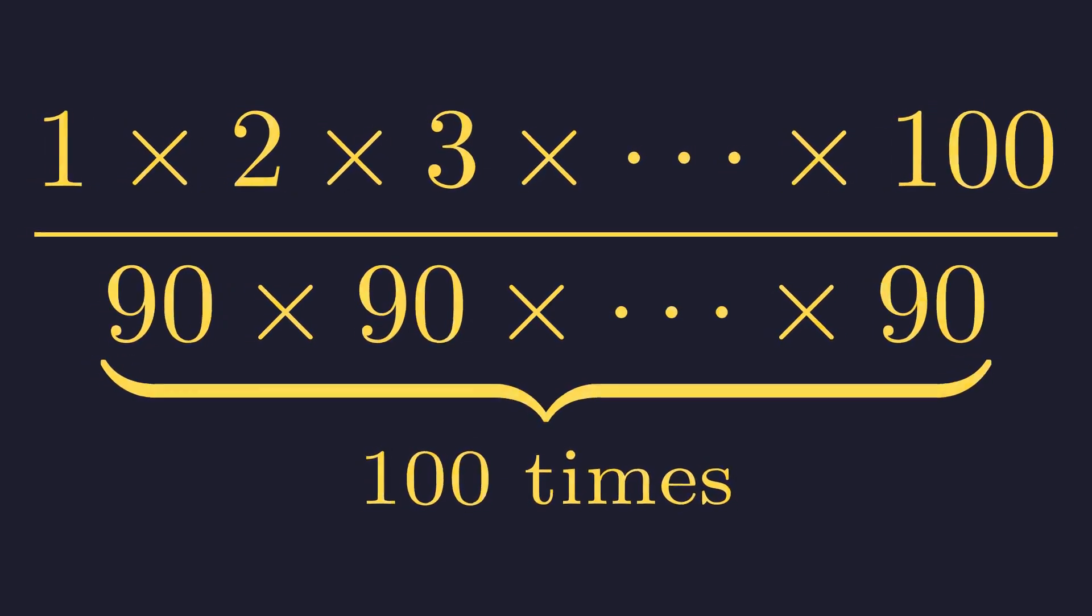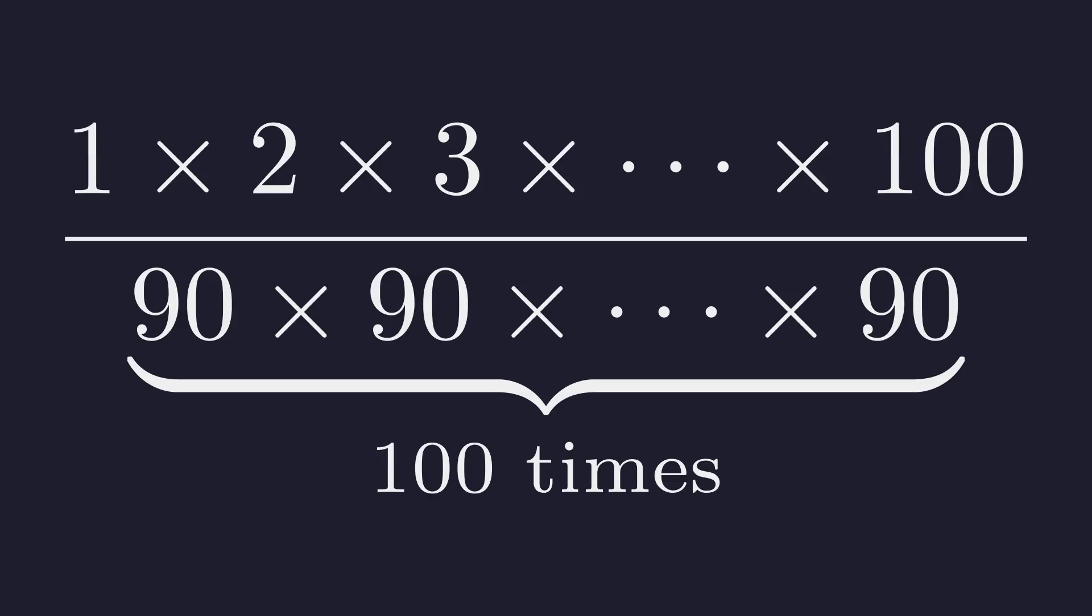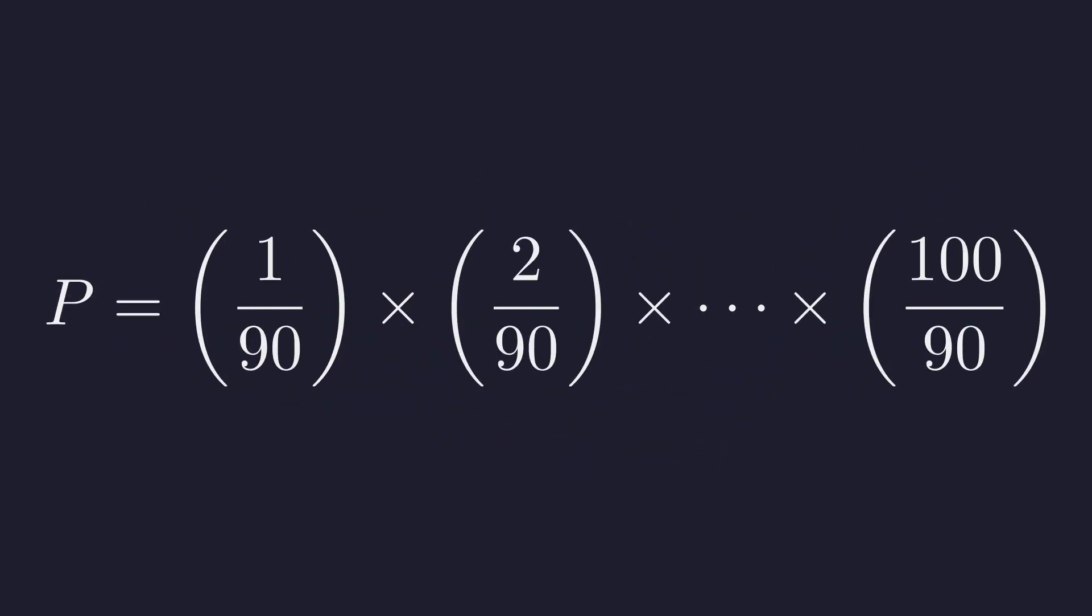Since there are 100 terms on top and 100 on the bottom, we can regroup this into a product of 100 fractions. Now our question has transformed. Is this long product of fractions, which we'll call p, greater than 1 or less than 1?